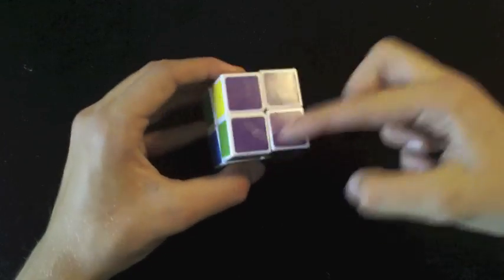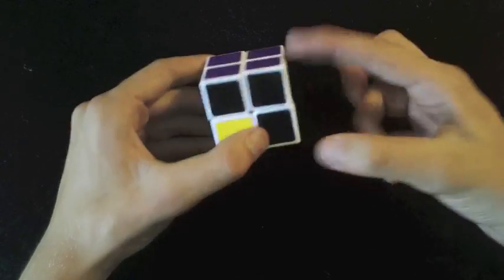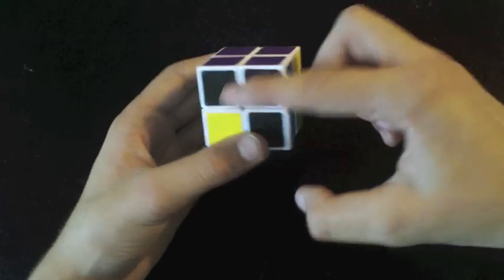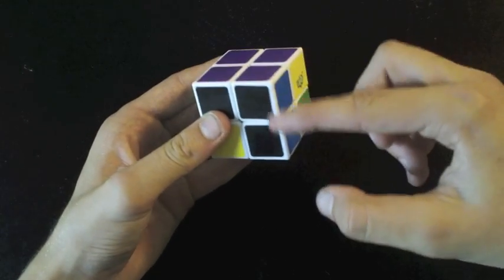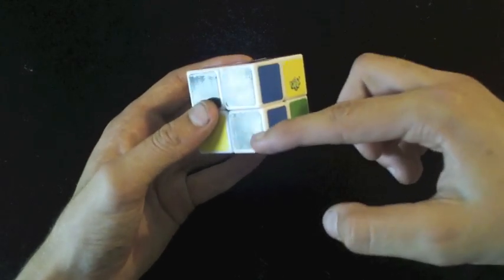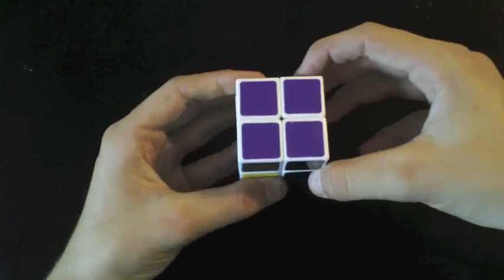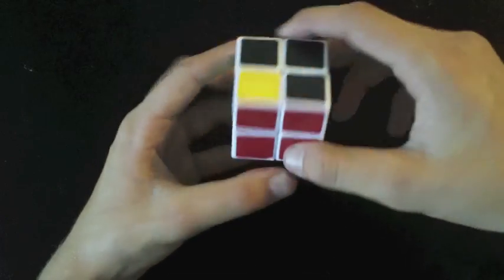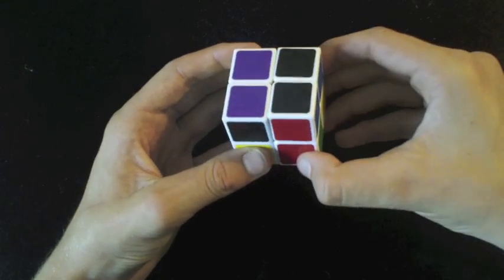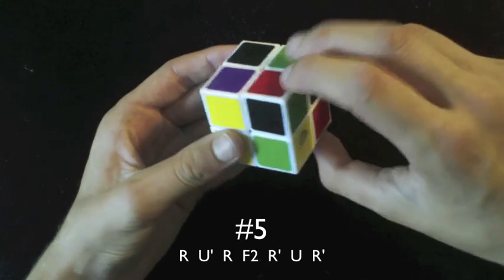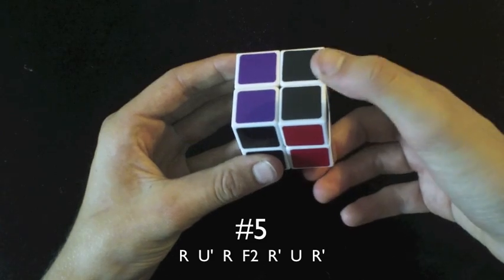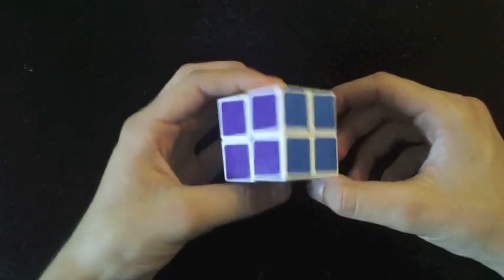In this case, in the top layer, you've got a 2x1 block that you've found anywhere. And what you want to do is have it at the front, and you want to match up the right corner on the bottom layer, so it looks like this. And this algorithm's going to switch these two pieces on the top, and these two pieces on the bottom. And so, the algorithm is this. R, U prime, R, F2, R prime, U, R prime. And as you can see, it finishes the cube.